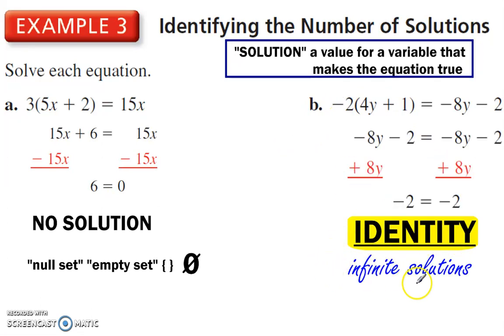This has infinite solutions. We call this an identity. An identity has infinite solutions. So if the statement is true, negative 2 is equal to negative 2, and there's no more variable, that's an identity. No matter what you plug in for the variable, it's always going to be true.